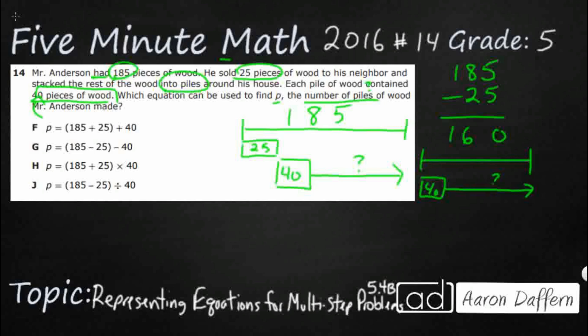So we've got two different steps, two different things that we're doing. We are first subtracting — we're subtracting this 25. So let's take a look at our answer choices.